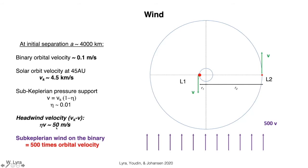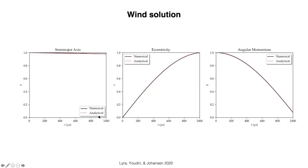That sounds like not much, but it's a lot compared to the binary orbital velocity. These objects are very low mass, so they are orbiting each other at about 0.1 meters per second.